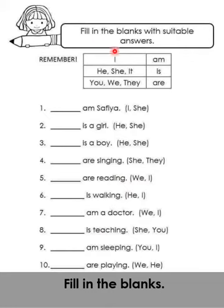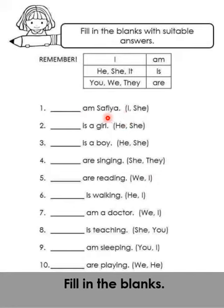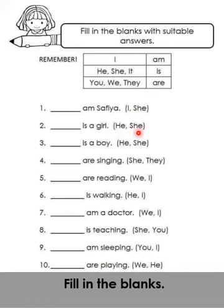For this exercise, fill in the blanks with a suitable answer. For example, question number one: if it says 'M', we put 'I' in front — because it sounds like: I am a... I am Safiya. We cannot put 'She am Safiya', so we put 'I am Safiya'. This sentence is to state yourself. Question number two: blank is a girl. If girl, do we put 'he' or 'she'? We use 'she'. She is a girl. Complete the rest of the exercise, and don't forget to take a picture and send it to the teacher.